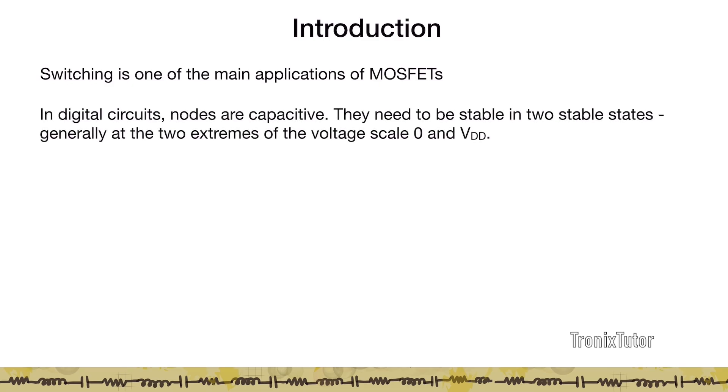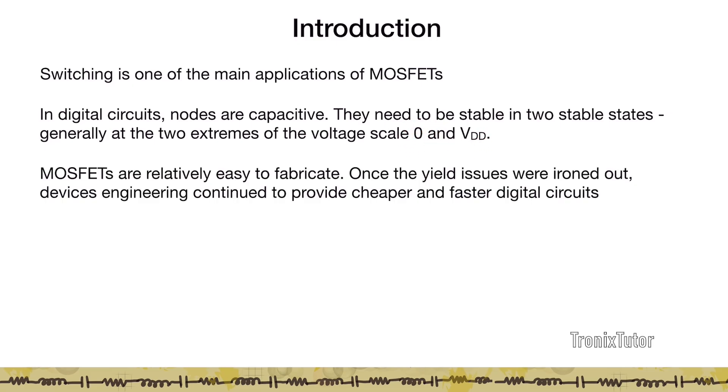In digital circuits, nodes are capacitive and normally they need to be stable in two states, namely a zero and a VDD. We have seen that MOSFETs are relatively easy to fabricate and hence continued scaling was able to provide cheaper and faster digital circuits, hence led to the proliferation of MOSFETs in the digital design space today.